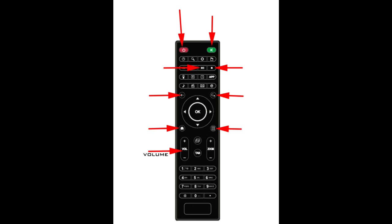The volume button is used to turn up or turn down the volume on playback of streams. We recommend that you turn the volume up on your TV remote as loud as it will go and use the volume button on the StreamBox remote to control the volume of playback.